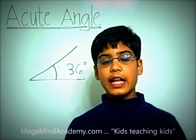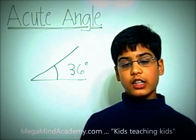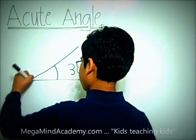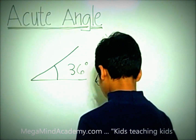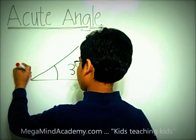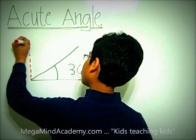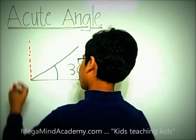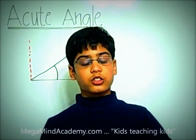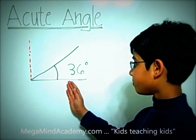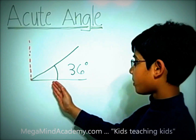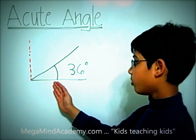Now, let's double check to be sure. Let's draw the 90 degree line. The 90 degree line is perpendicular to the horizontal line. This line, which is a 90 degree line, is perpendicular to the horizontal line, which is this line.